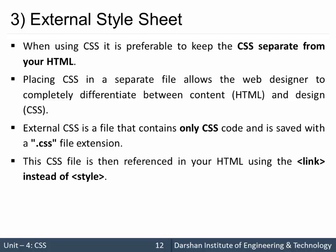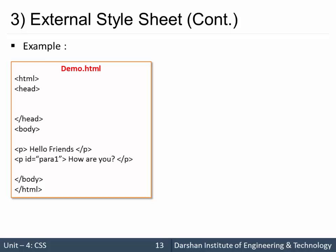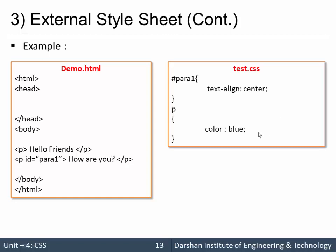We save our design code with a .css extension, and then we need to link these files using a link tag inside our HTML. For example, I am writing demo.html which contains only the content, and a separate .css file with only the design. Without linking them, there are no styles — no inline, no internal, no external. To apply the styles, I need to link both files.